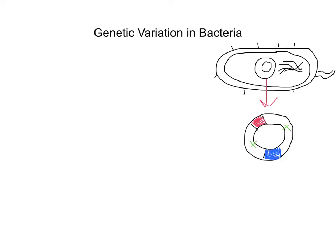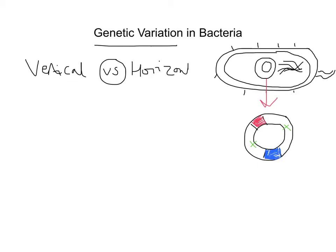So let's just think about that idea of passing these mutations, or this genetic variation, on. Because there are two ways we can do it — one is through the vertical method and one is via the horizontal method. So first of all we're going to talk about vertical gene transmission.